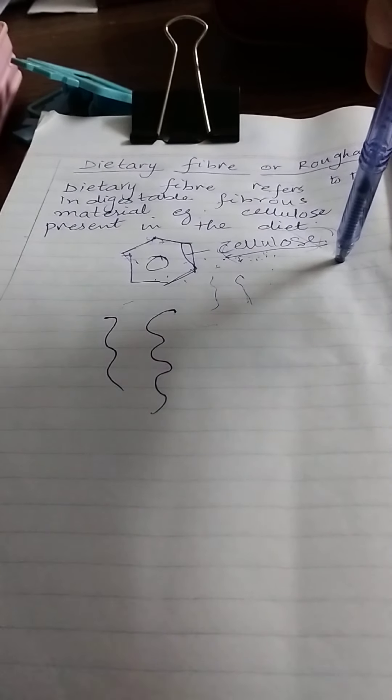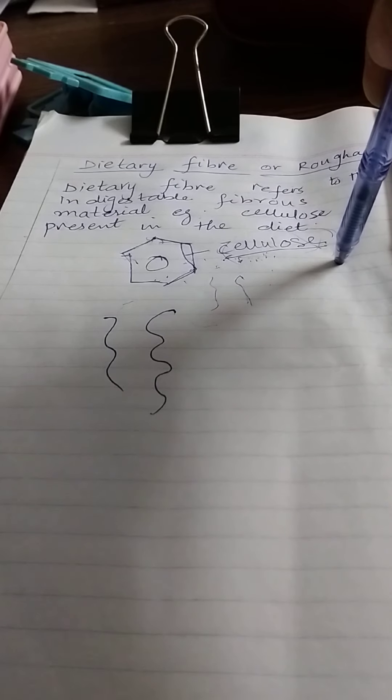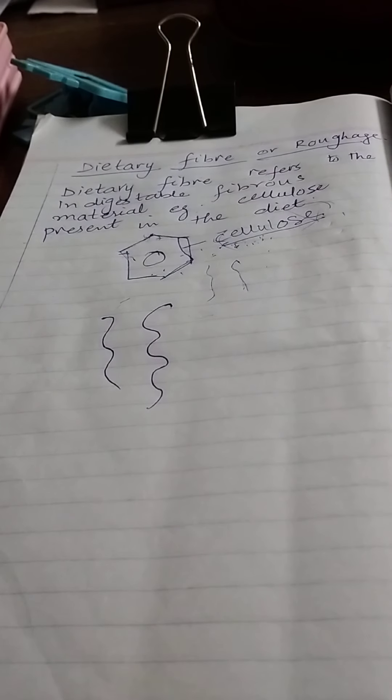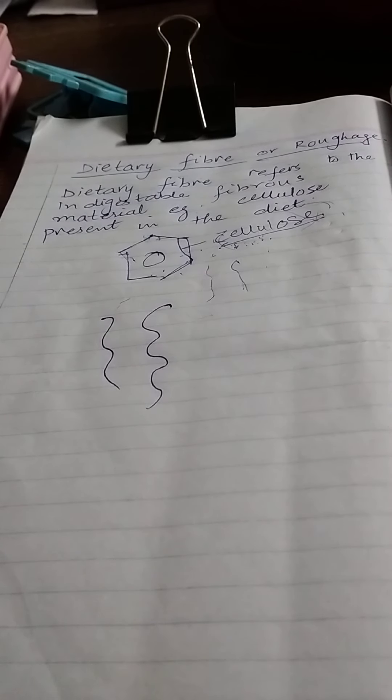We cannot digest this cellulose portion and it remains as dietary fiber, an indigestible fibrous material. If any cattle like cow or goat eat this plant material, they can easily digest this cellulose because in their intestine, various bacteria are present. These bacteria secrete different enzymes that help digest the cellulose.